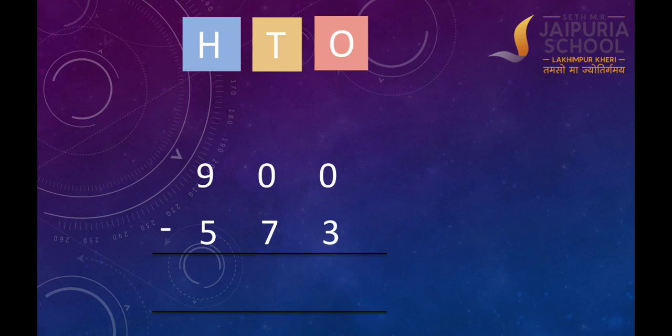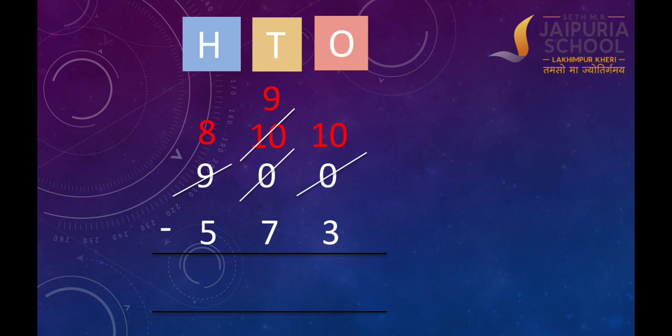Let's subtract 573 from 900. Look at the ones column — we cannot subtract 3 ones from 0 ones. We also cannot borrow a 10 from 0 tens. So first we borrow 100, leaving 8 hundreds behind. As we know that 100 is equal to 10 tens, now we have 10 tens.